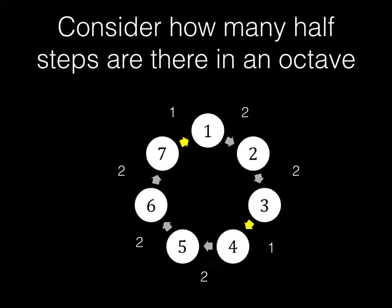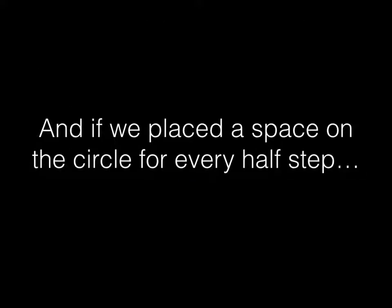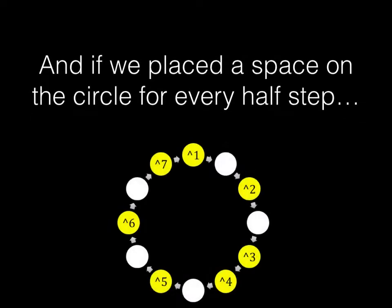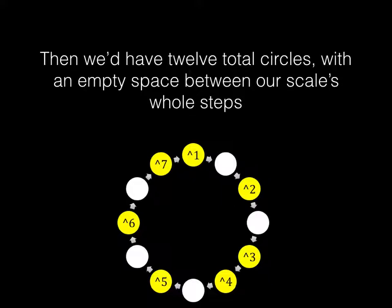And so if we unraveled this, and we placed a step on the circle for every half step, we would get something like this, and we'd have 12 total circles with an empty space between our scale's whole steps.